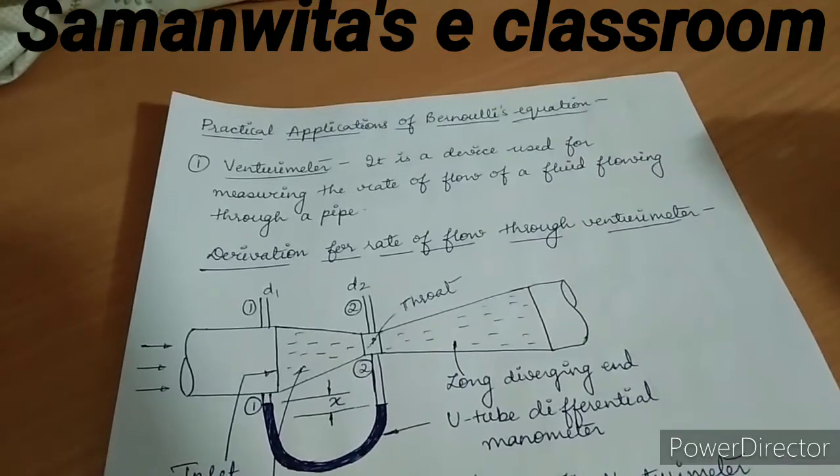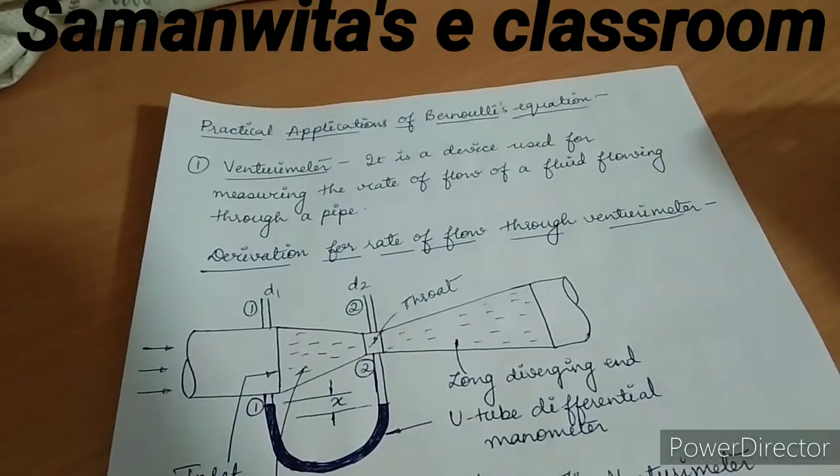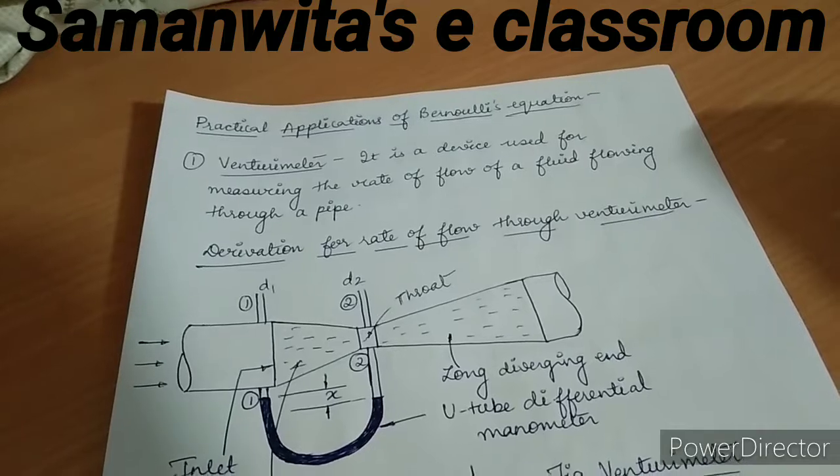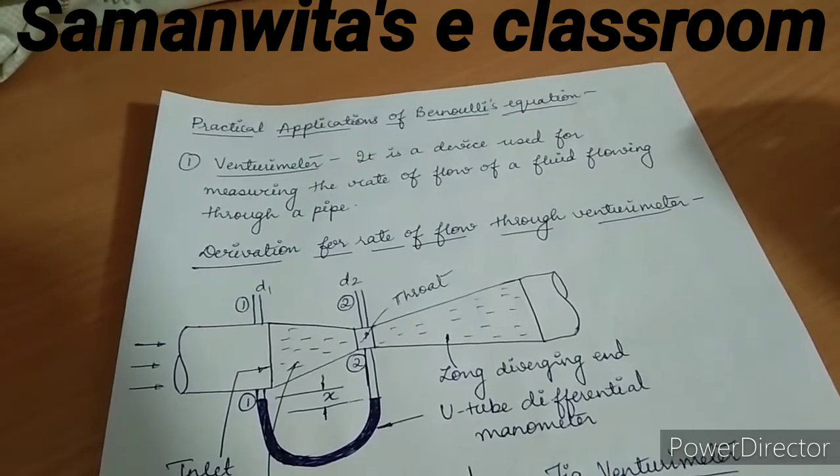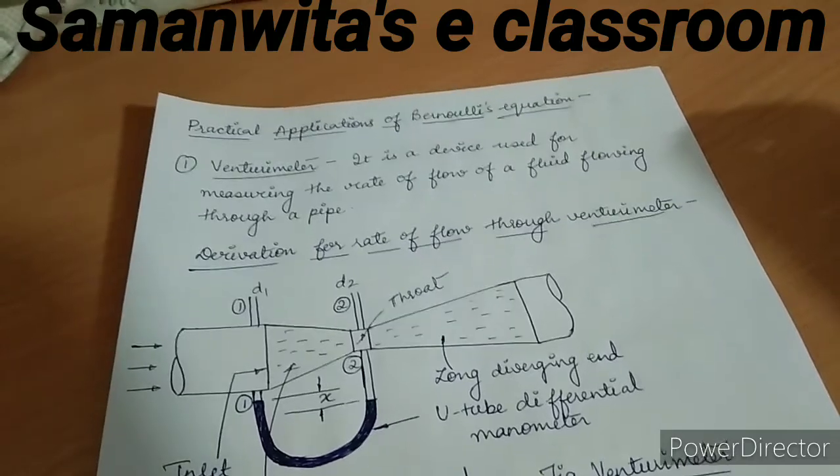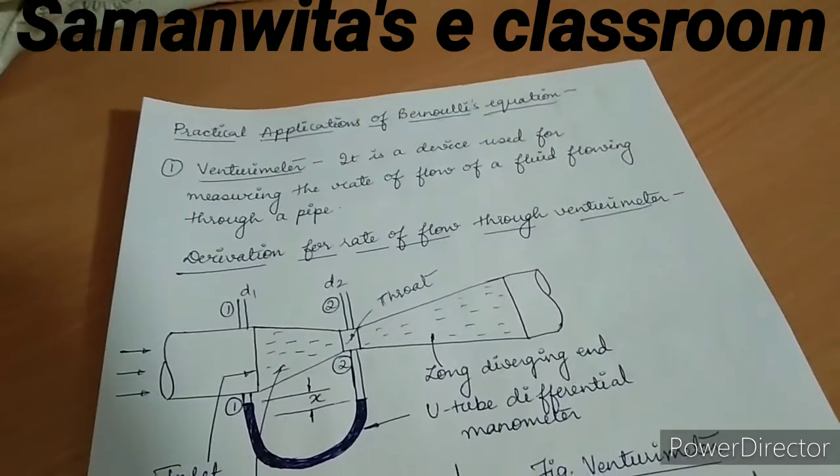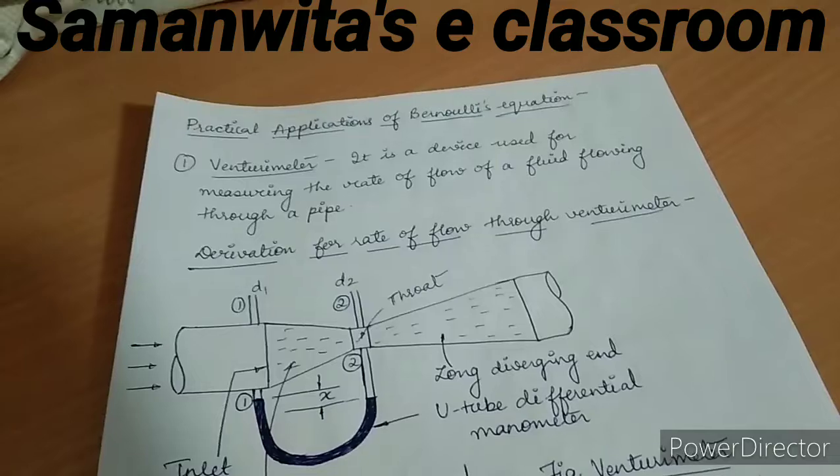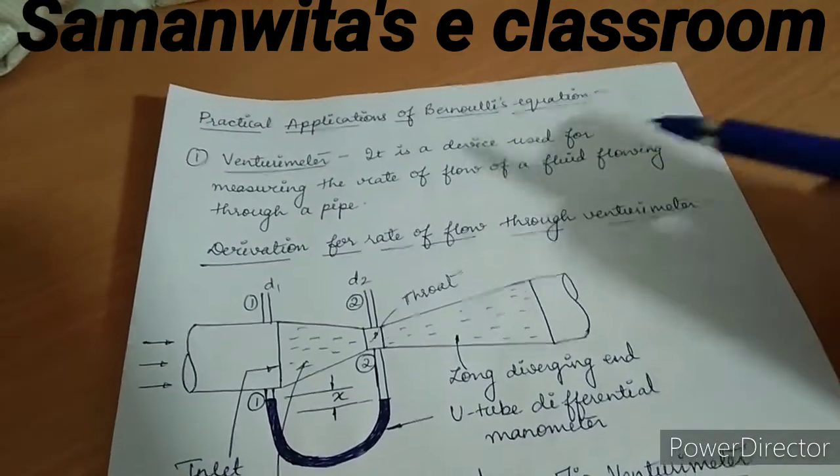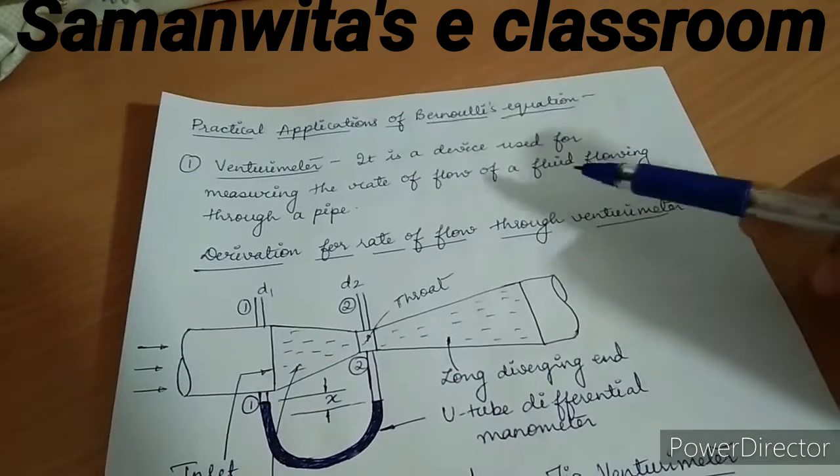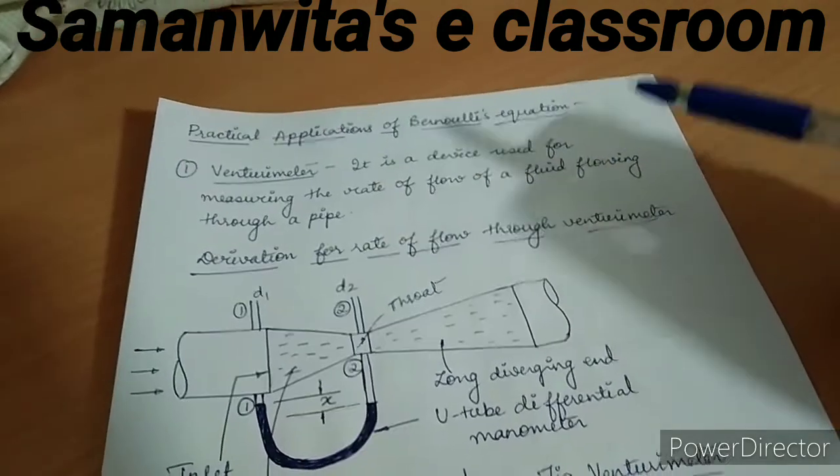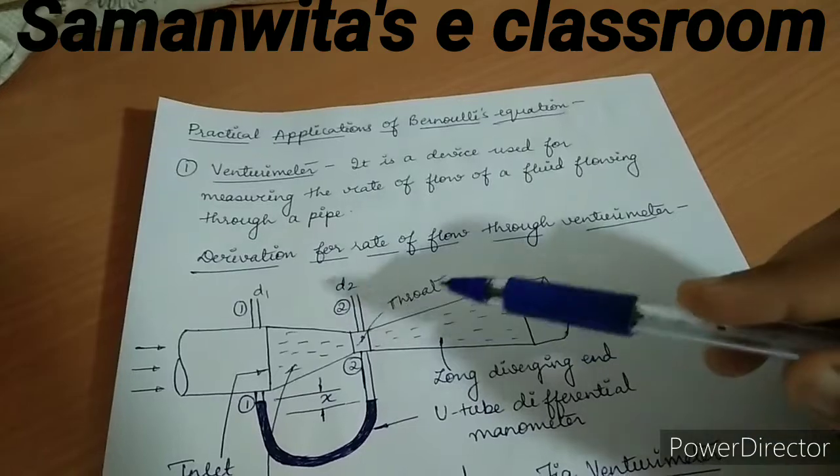Hello everyone, in the previous session I discussed Bernoulli's equation being applied to ideal and real fluid flow. We also saw numericals based on this equation. In this session we will discuss the practical applications of Bernoulli's equation, in which the first one I am taking is venturimeter - it is a device used for measuring the rate of flow of fluid flowing through a pipe. Next we will see the derivation for the rate of flow through the venturimeter.